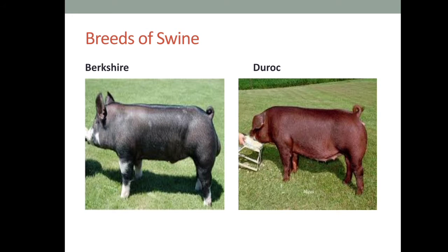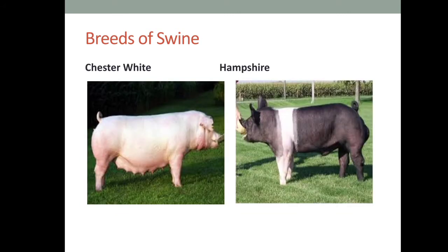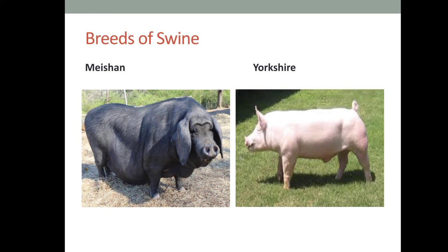Looking at the breeds visually: the Berkshire is fully black with characteristic white spots on the face and feet. The Duroc varies from light red to very dark red. The Chester White is all white with characteristic downward-pointing ears. The Hampshire is black with a white belt. The Meishan has downward ears, black color, and is very fat and slow growing. The Yorkshire has erect ears, distinguishing it from the Chester White.